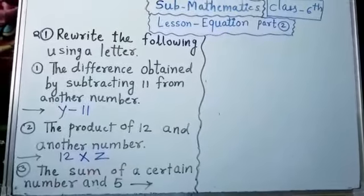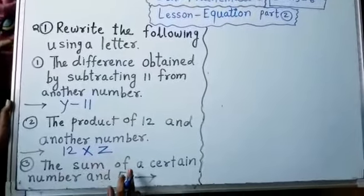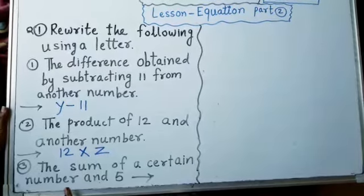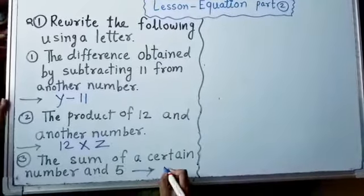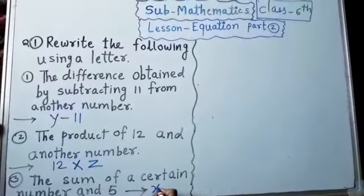And third one is the sum of a certain number and 5. Certain number means let us consider x.